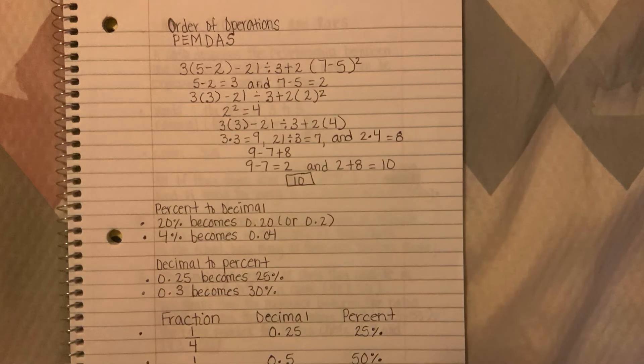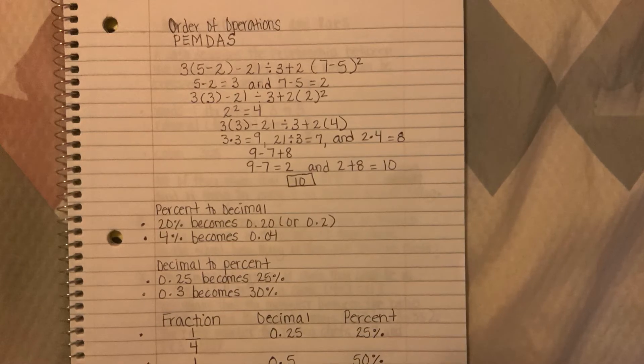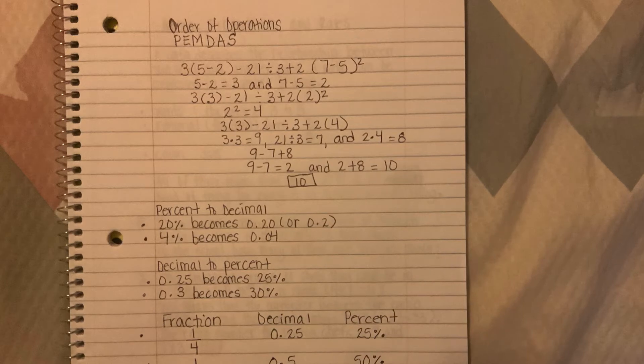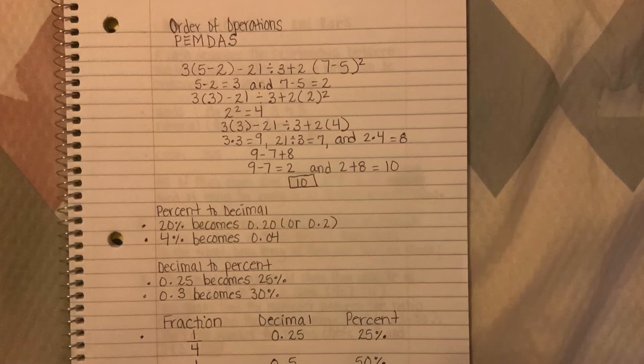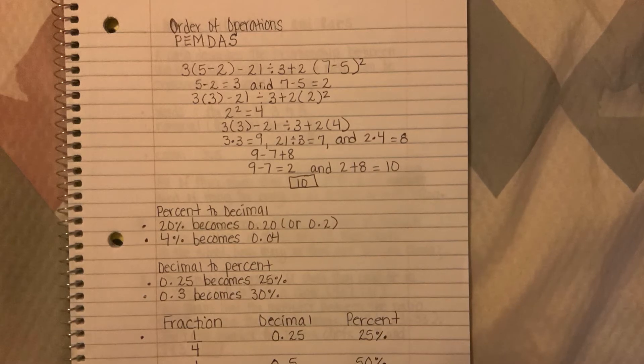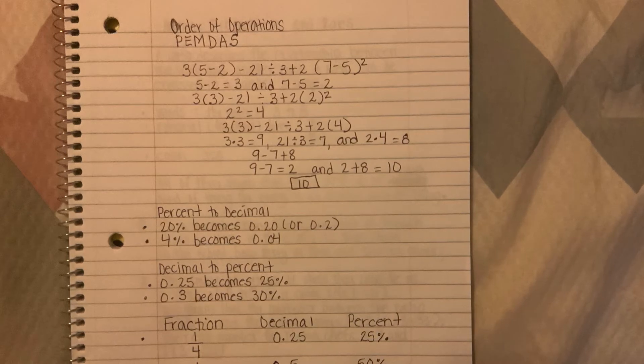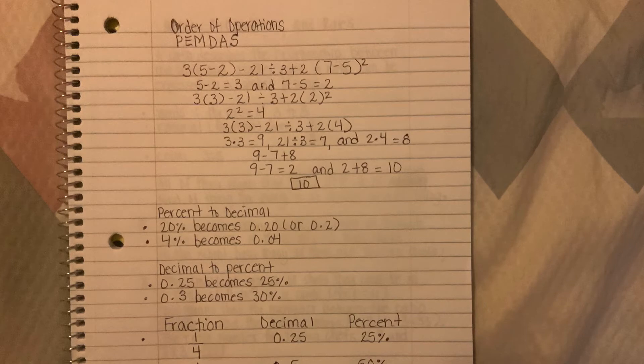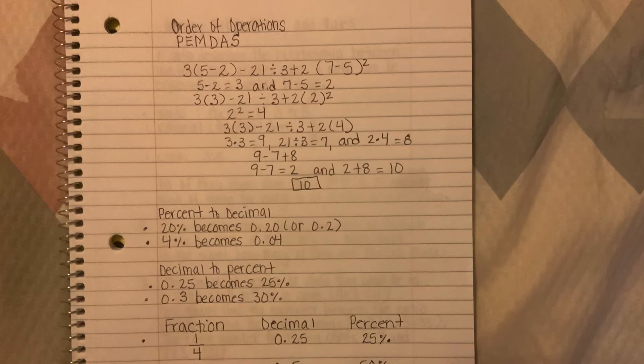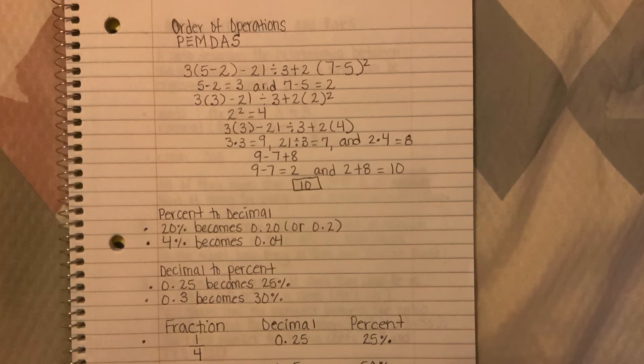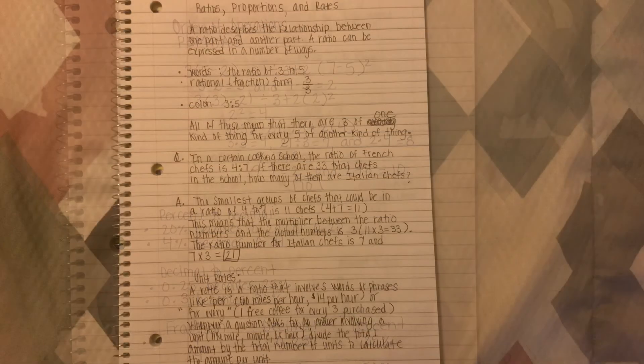We have the column fraction, decimal, and percent. Let's start off with 1/4, which is one over four. The decimal converted will be 0.25, the percentage is 25%. Another problem: 1/2, in decimal form that becomes 0.5, and then we have our percentage 50%.